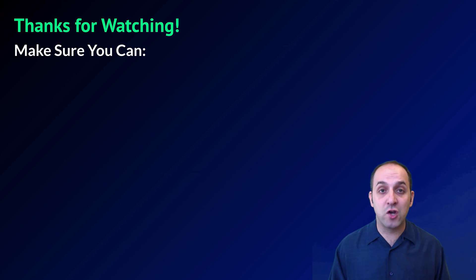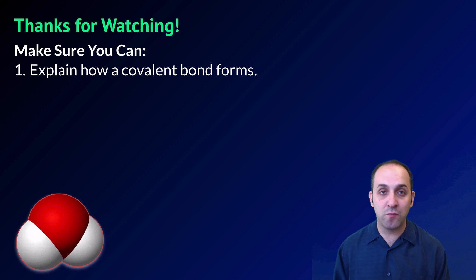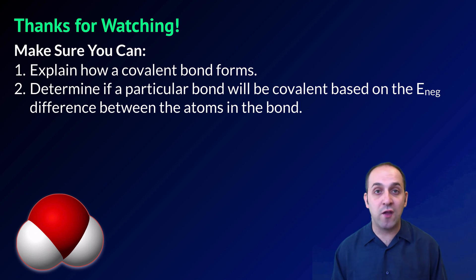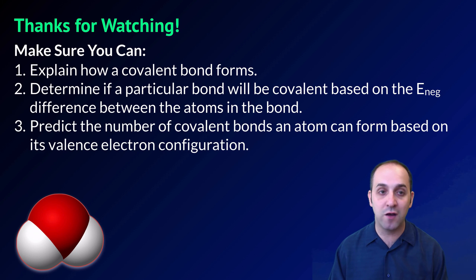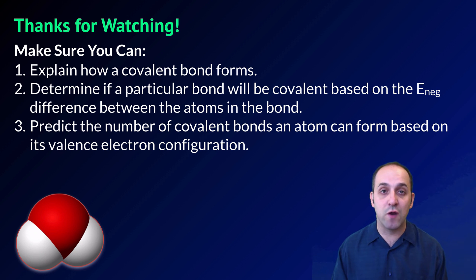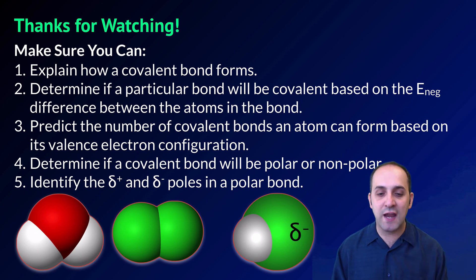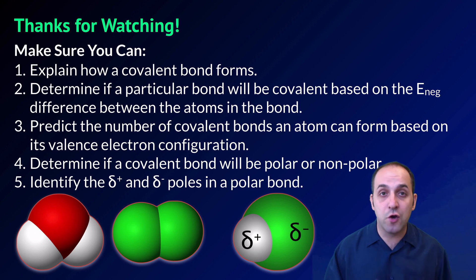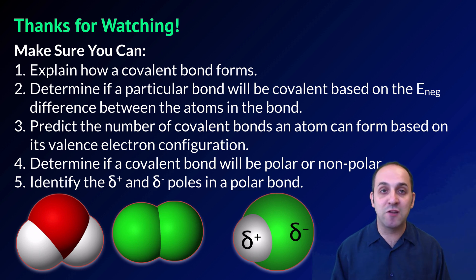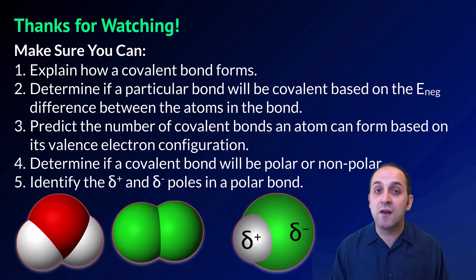Thanks so much for watching our discussion of covalent bonds. Make sure that you can do the following things: explain how a covalent bond forms; determine if a particular bond will be covalent based on the electronegativity difference between the atoms; predict the number of covalent bonds that an atom can form based on its valence electron configuration; and determine if a covalent bond will be polar or nonpolar and identify the partially negative and partially positive poles in a polar covalent bond. If you can do all of those things, you're doing great. Take a moment and write down any questions you have — you can always leave them in the comments below this video or get in touch with me through the information in the info field. Thanks so much for watching. Have a great day.